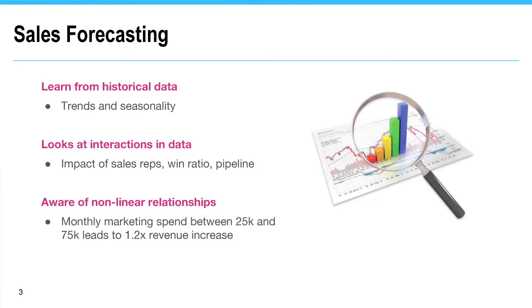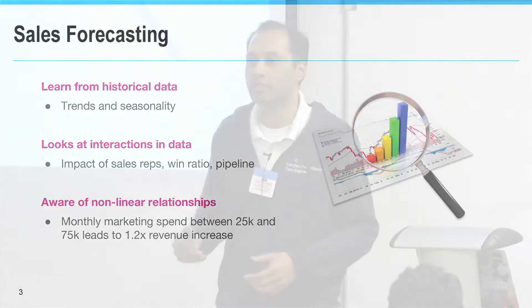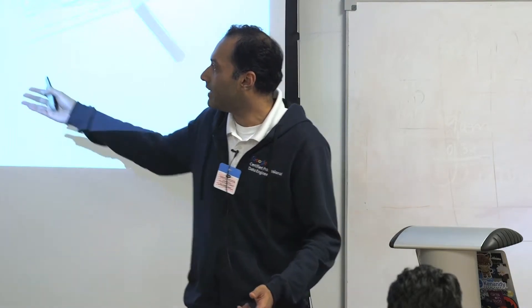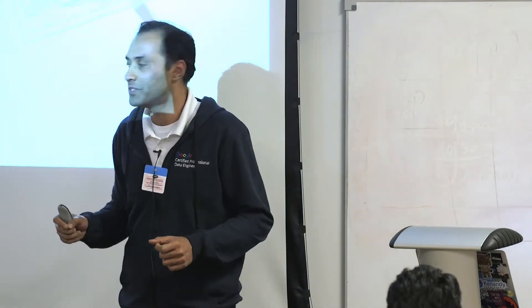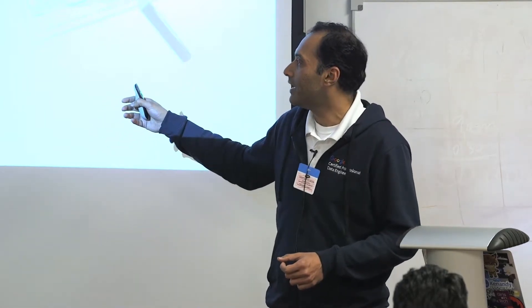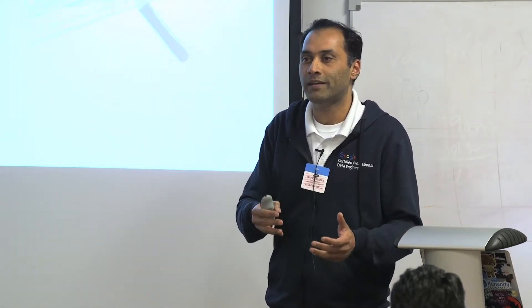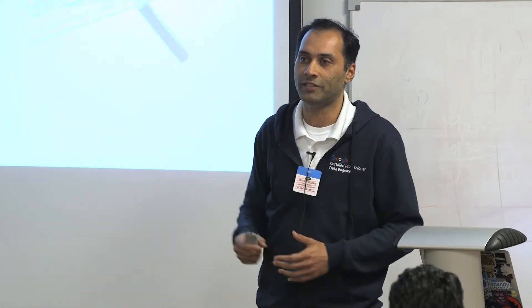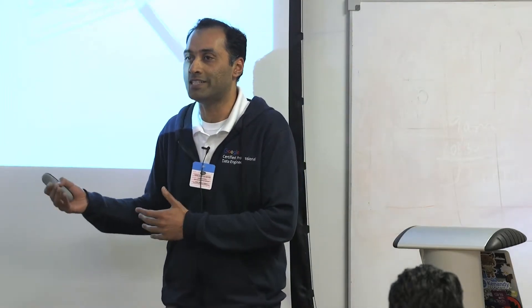How does forecasting work? We learn from three basic tenets. First, we learn from historical data, which gives you trends and seasonality — are there specific months or quarters where you do better than others? Second, we look at interactions in data, such as how hiring new sales reps impacts your total revenue. And finally, nonlinear relationships — for example, marketing spend does not always correspond one-to-one with revenue; there's always a non-linearity associated with it, and machine learning algorithms can detect those.